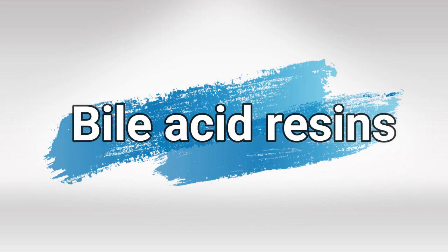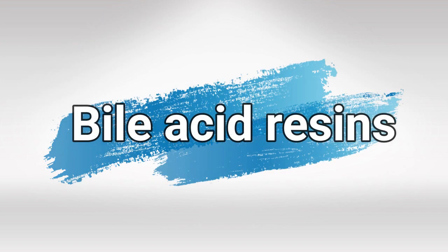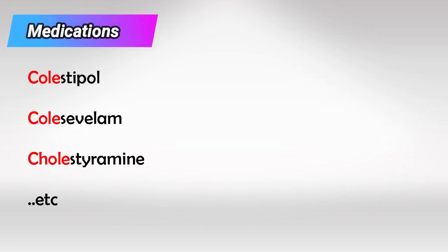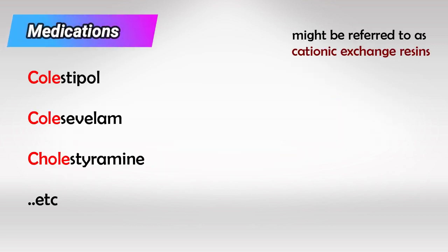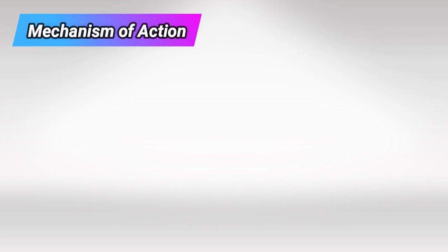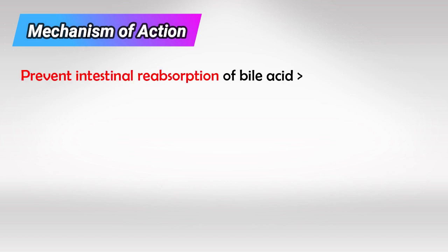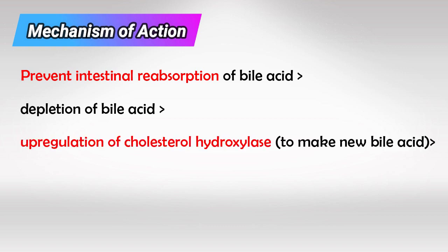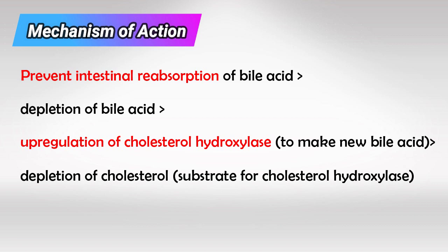Next we have bile acid resins. These are the medications starting with 'chole-.' They are sometimes referred to as cationic exchange resins. From the name we can get the function — they inhibit bile acid reabsorption in the small intestine. Normally bile acid is reabsorbed back into the liver and reused, so once we inhibit that reuse, the liver has to make new bile acid using cholesterol, and that's how it lowers cholesterol.